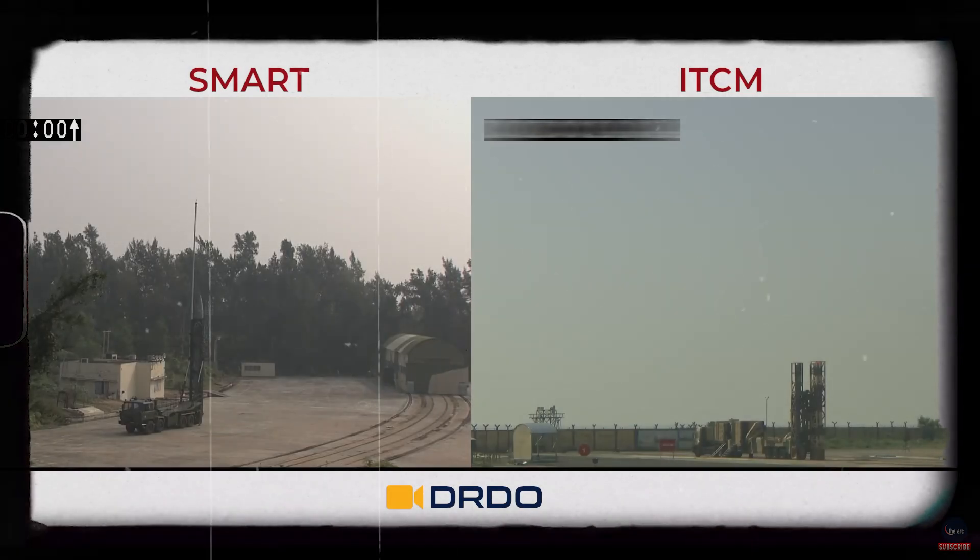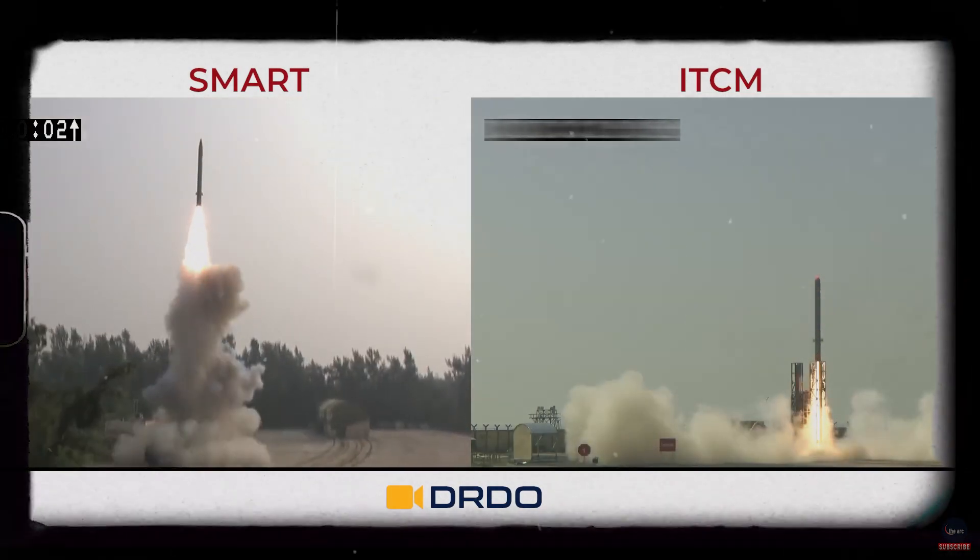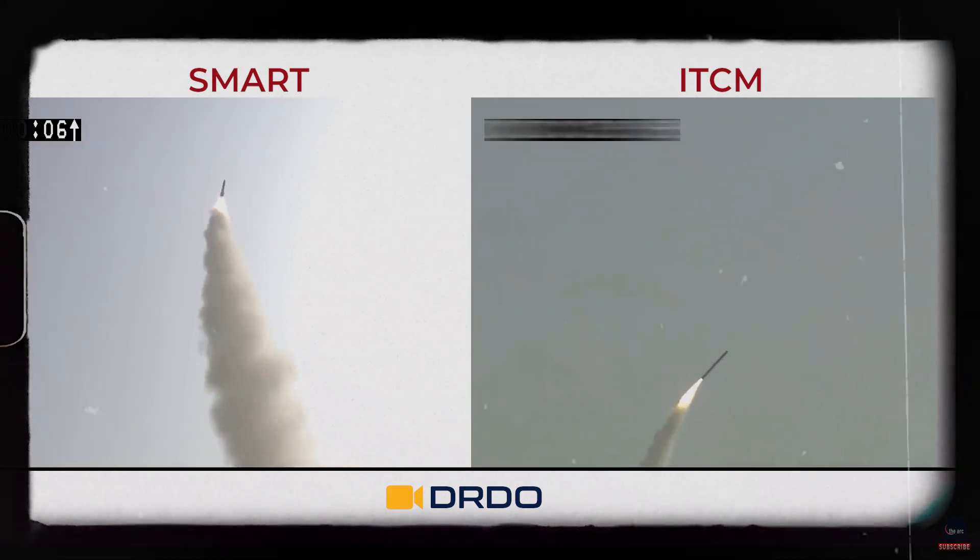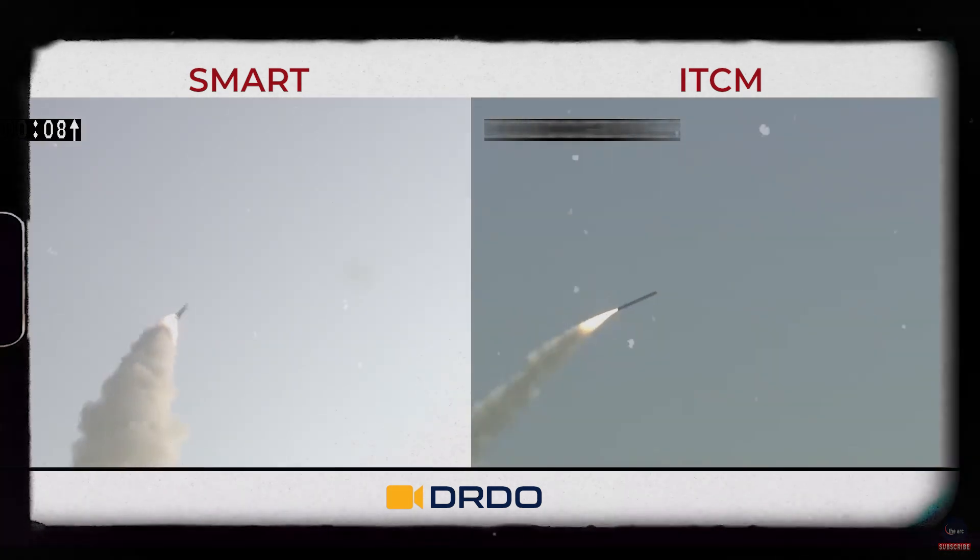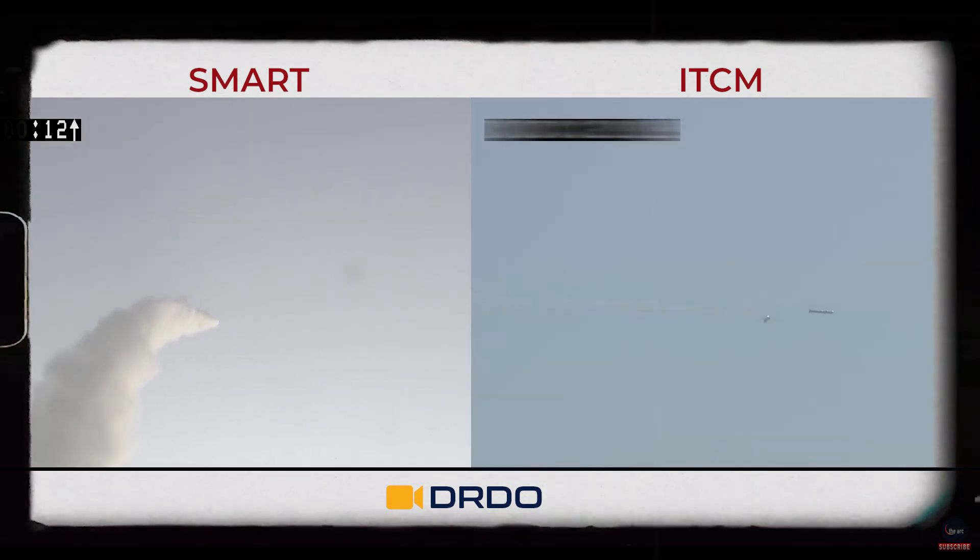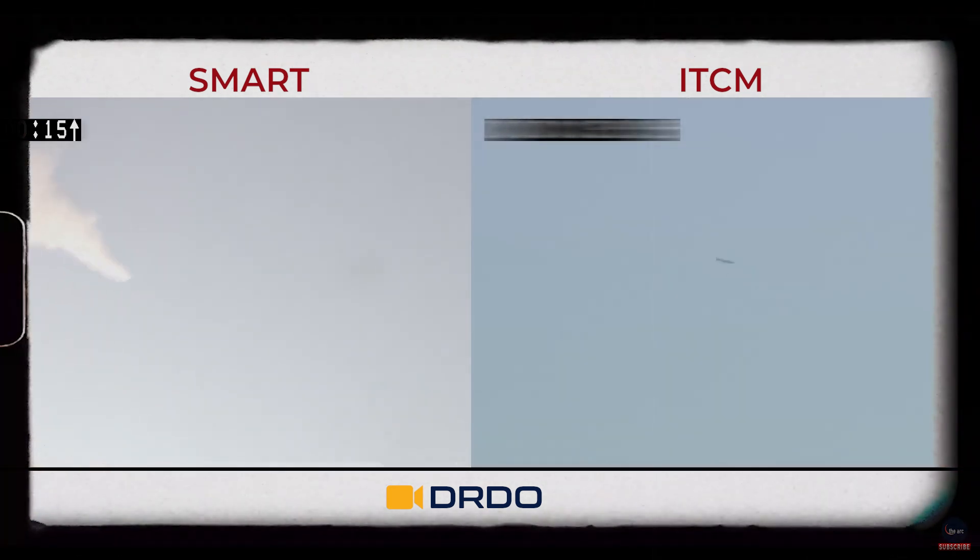India conducted flight tests of multiple missiles this year, including the Agni-5 with MIRV, the ITCM cruise missile, BrahMos cruise missile, SMART, Rudram-2, V-Shorats, etc. But what are these different types of missiles? And why do we need so many different types? And how important are they for a country's defense?